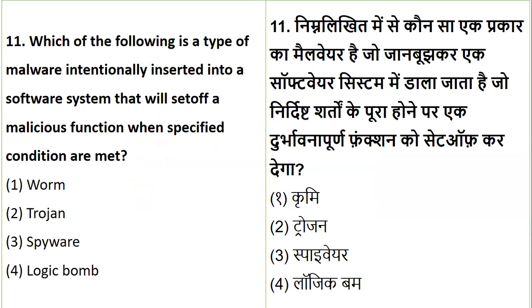The first question is: which of the following types is a malware intentionally inserted into a software system that will set off a malicious function when specified conditions are met? The options are worm, Trojan, spyware, or logic bomb. The insertion is done at a purpose level so that certain things happen when conditions are specified. The answer is logic bomb — the one that sets up a malicious function when specified conditions are met.